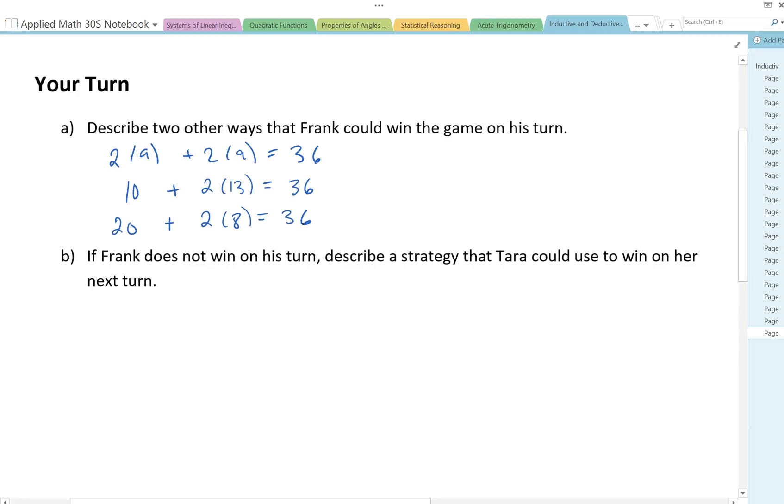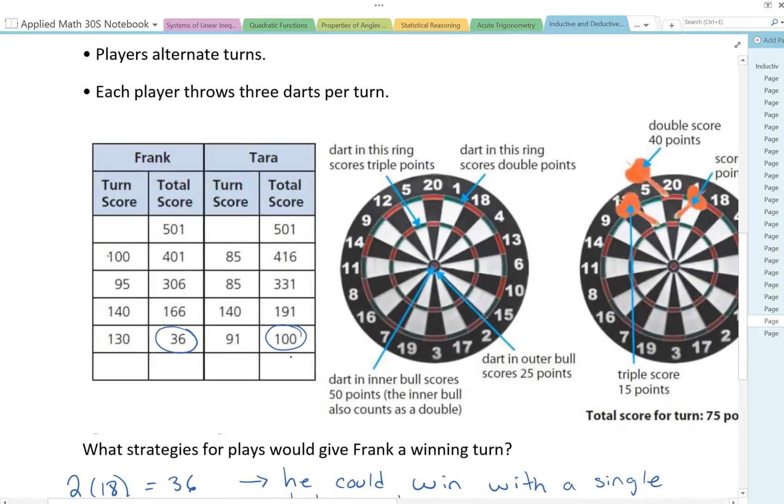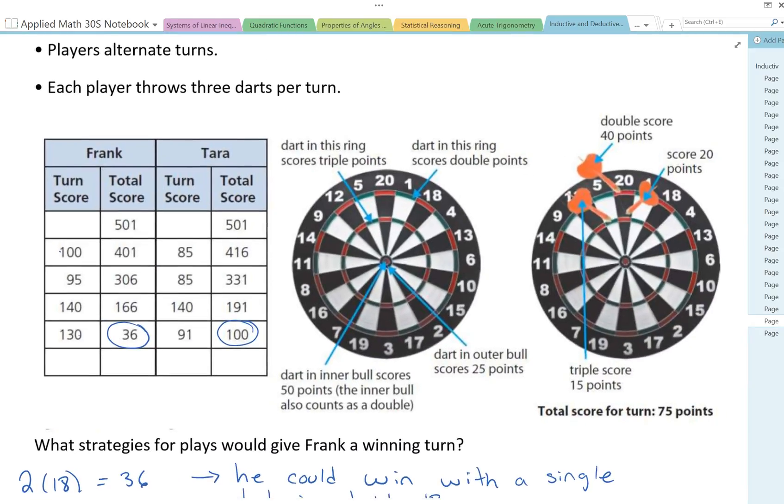So try to think of some other ones, and then B says if Frank does not win on his turn describe a strategy that Tara could use to win on her next turn. So thinking that she needs to get a double at the end, and how much does she need? If we go back and have a look she needs 100, so what would be a way to get 100?